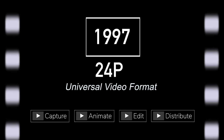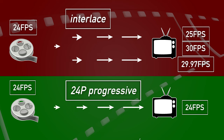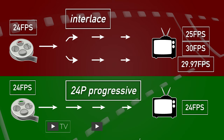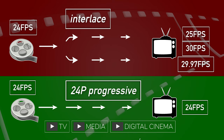In 1997, I had the honor of being part of the development of 24P. The purpose of this was to go back in time and re-implement the same concept of television in 1926, which was to capture, animate, edit, and distribute in true 24 frames per second from beginning to end. This would avoid the fork in the road of using interlaced technology during production, and rather make it just another deliverable in the distribution supply chain. It would also become the new industry standard, in use today in all areas of production, including TV, media, and digital cinema.